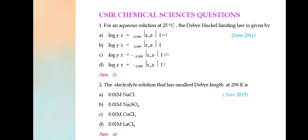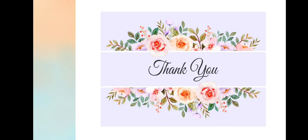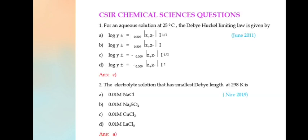For an aqueous solution at 25°C, the Debye-Hückel limiting law is given by the third option. The electrolyte solution that has smallest Debye length is sodium chloride.